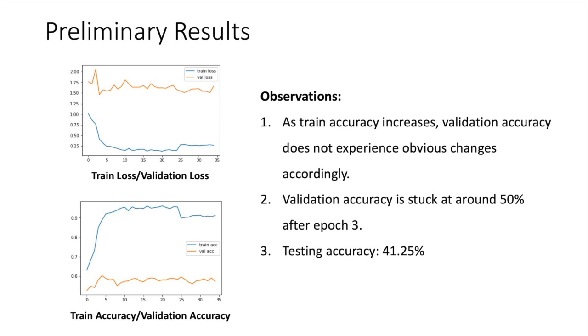After implementation, we can see here we have two graphs. The first one is the training loss and validation loss. And the second is the curve for training accuracy and the validation accuracy. From these two graphs, we have a couple of observations. The first one is as training accuracy increases, our validation accuracy does not experience obvious changes accordingly. It's vibrating around a number. And the second one is that we found the validation accuracy is stuck at around 50% after epoch 3. And the third one is our testing accuracy is 41.25%.